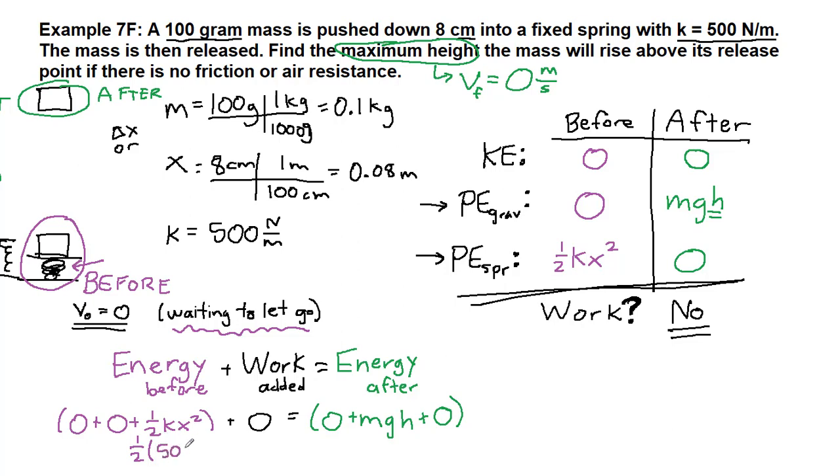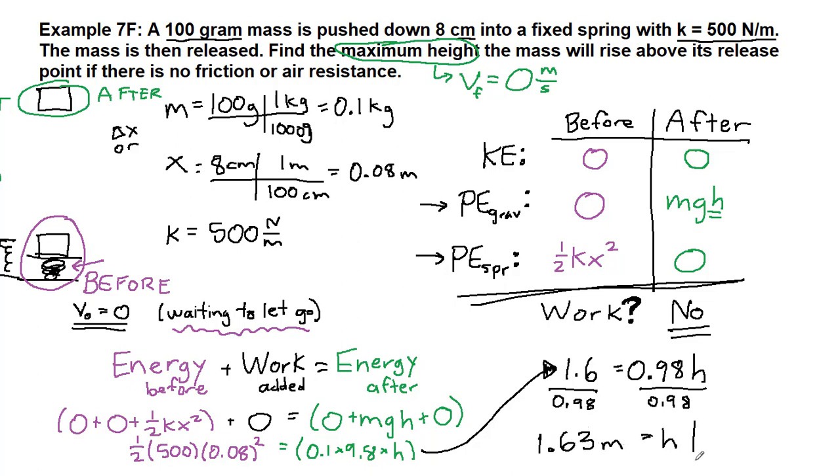All right so we put in the numbers that we have from before. We changed all of the units to be the correct standard units so most of our work is already finished for us. On the left we'll have numbers we can just plug into the calculator. On the right we have some of that as well 0.1 times 9.8 times the height we're looking for and so we will plug the left side into our calculator. We get 1.6 is equal to 0.98 times the height so we can divide both sides by 0.98 and we will get our final answer of 1.63 meters is equal to the height. So a little less than six feet in the air but we did push it quite far into a reasonably strong spring.